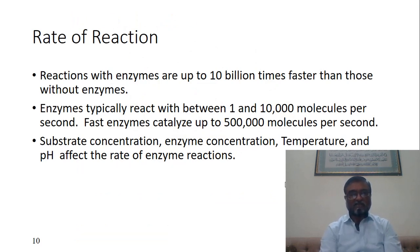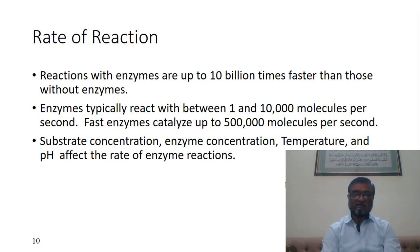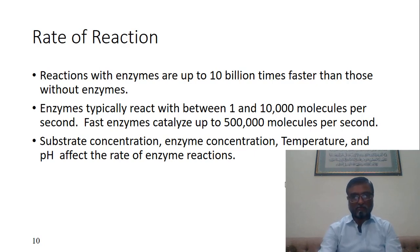Reactions with enzymes are up to 10 billion times faster than those without enzymes. Enzymes typically catalyze between 1,000 and 10,000 molecules per second; fast enzymes can catalyze more than 500,000 molecules per second. Factors affecting enzyme activity include substrate concentration, enzyme concentration, temperature, and pH.